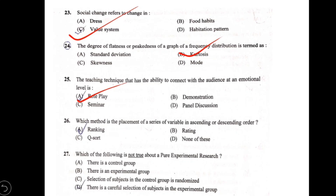Which of the following is not true about pure experimental research? Options: A) there is a control group; B) there is an experimental group; C) selection of subjects in the control group is randomized; D) there is careful selection of subjects in the experimental group. In pure experimental research, subjects in the experimental group are also randomized, not carefully selected. Option D is not true.